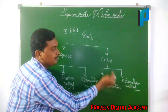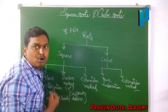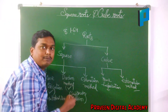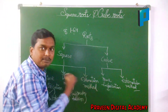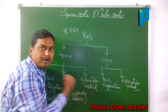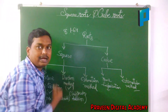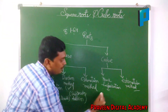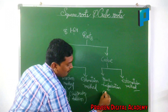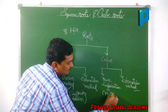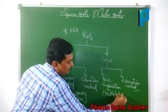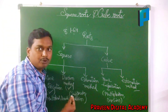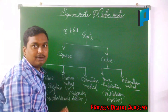Coming to cube roots: the prime factorization method is used in cube roots as well. In the prime factorization method, we can find how much number is multiplied to a particular number to make it a perfect cube, or how much number we have to divide to make it a perfect cube.